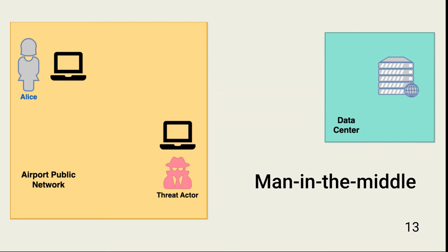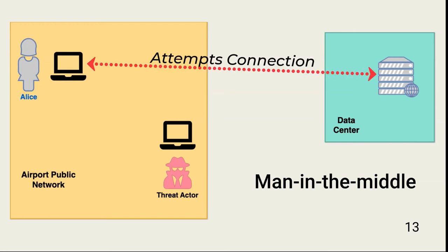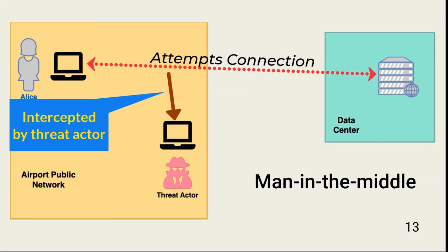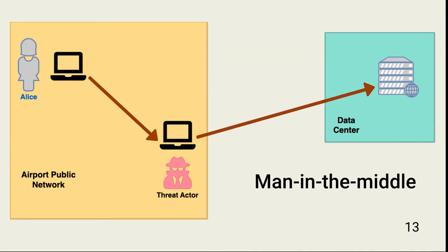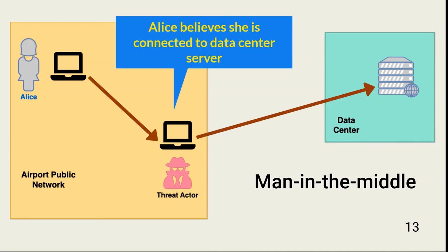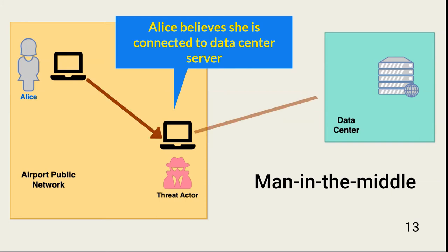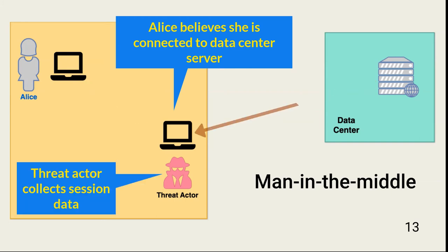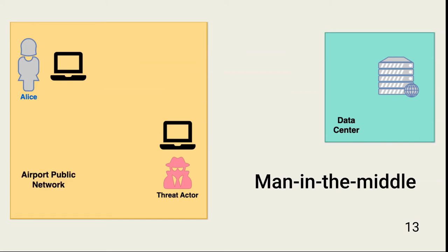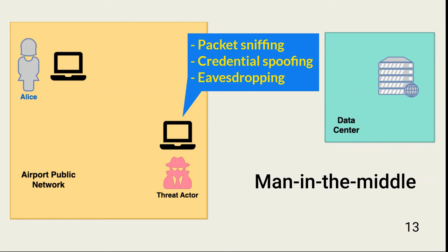Man-in-the-middle attacks are common attack vectors. Fundamentally, a man-in-the-middle attack happens when a user's attempt to connect to a resource is intercepted by a threat actor. The threat actor can leverage tools, techniques, and procedures such as network sniffing, credential spoofing, and eavesdropping.